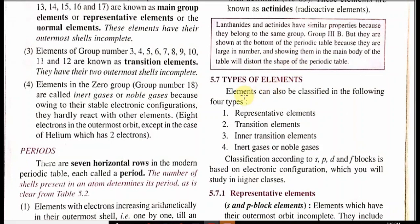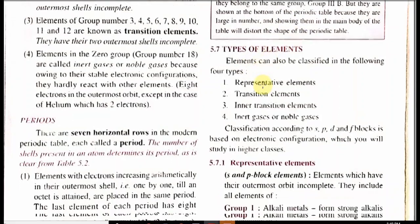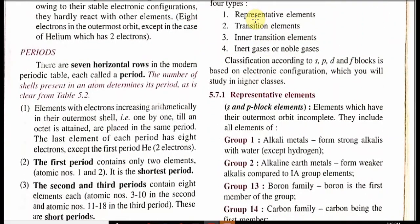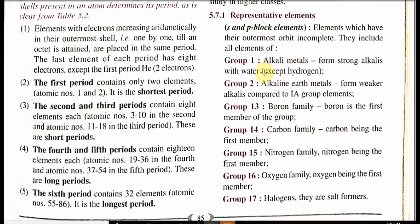There are four types of elements: representative elements, transition elements, inner transition elements, and inert or noble gas. Classification according to SPDF blocks is based on electronic configuration, which you will study in higher classes starting in Class 11. Representative elements are called S and P block elements. They include all elements of group 1A (alkali metals), which form strong alkali with water; group 2 (alkaline earth metals), which form weaker alkali; group 13 (boron family, boron being the first member); and group 14 (carbon family).